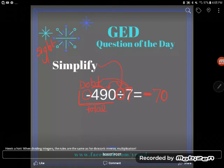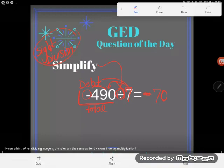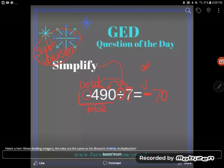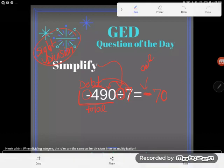So if I owe $490 among seven people, I owe each one of them $70, and hence the negative—that's like owing the money. Really simple problem.